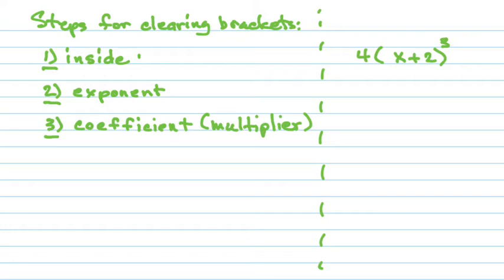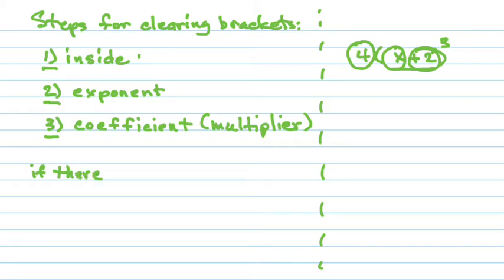The last and final thing to look for is the coefficient or multiplier, and we know it's a coefficient because it's right up against the bracket with no plus or minus between them. If there is more than one term inside the bracket — remember, every time you see a plus or minus it signals the start of a new term — you must multiply every term by the coefficient.